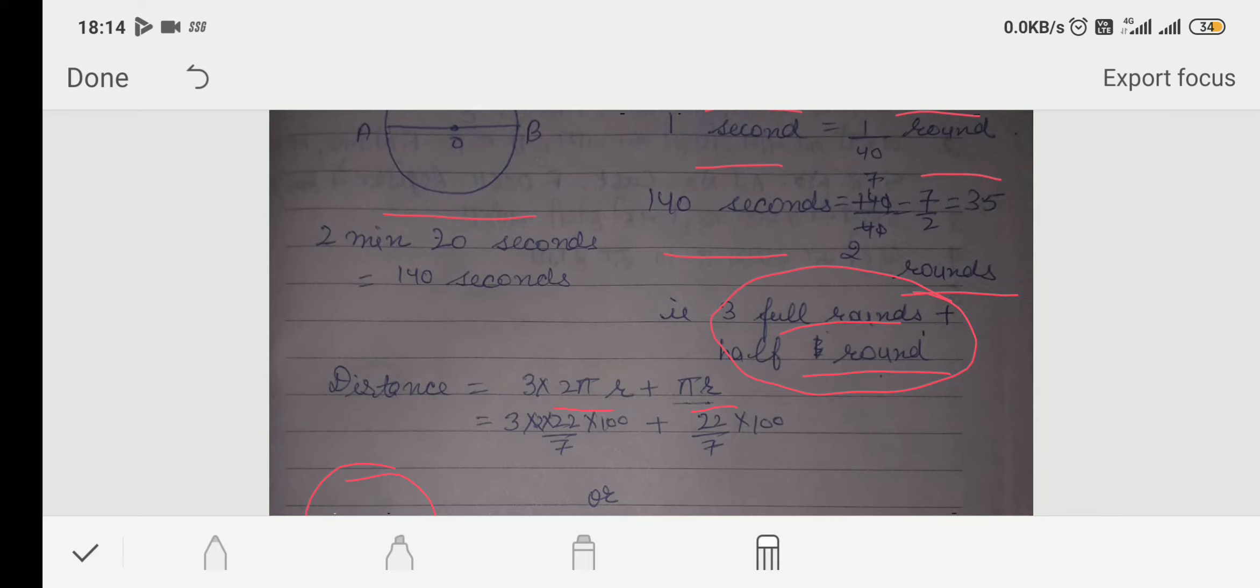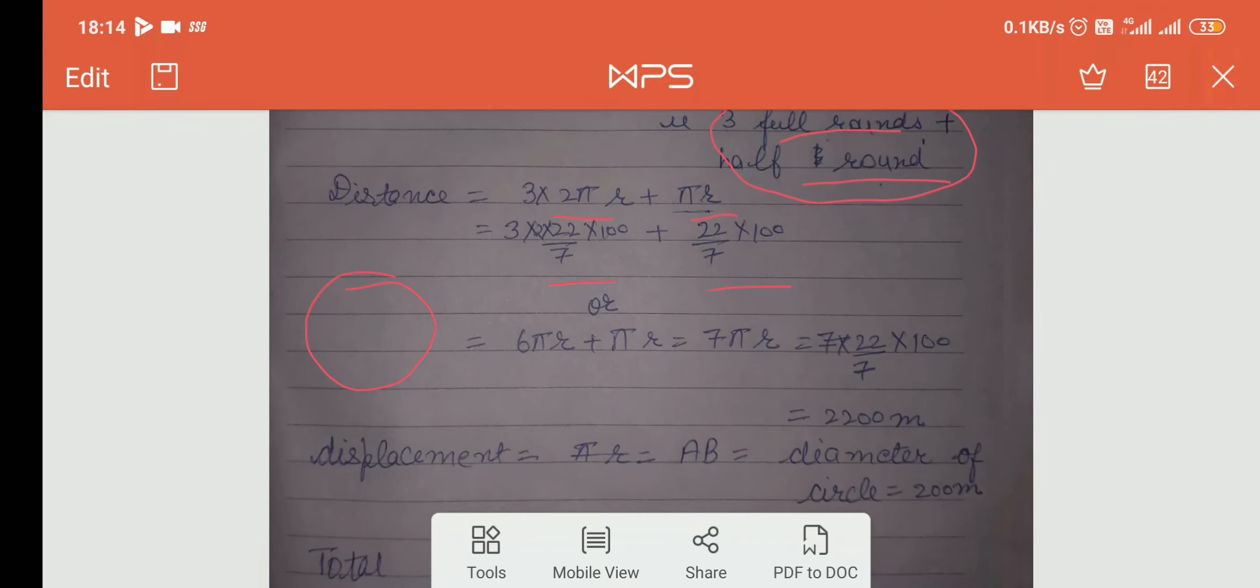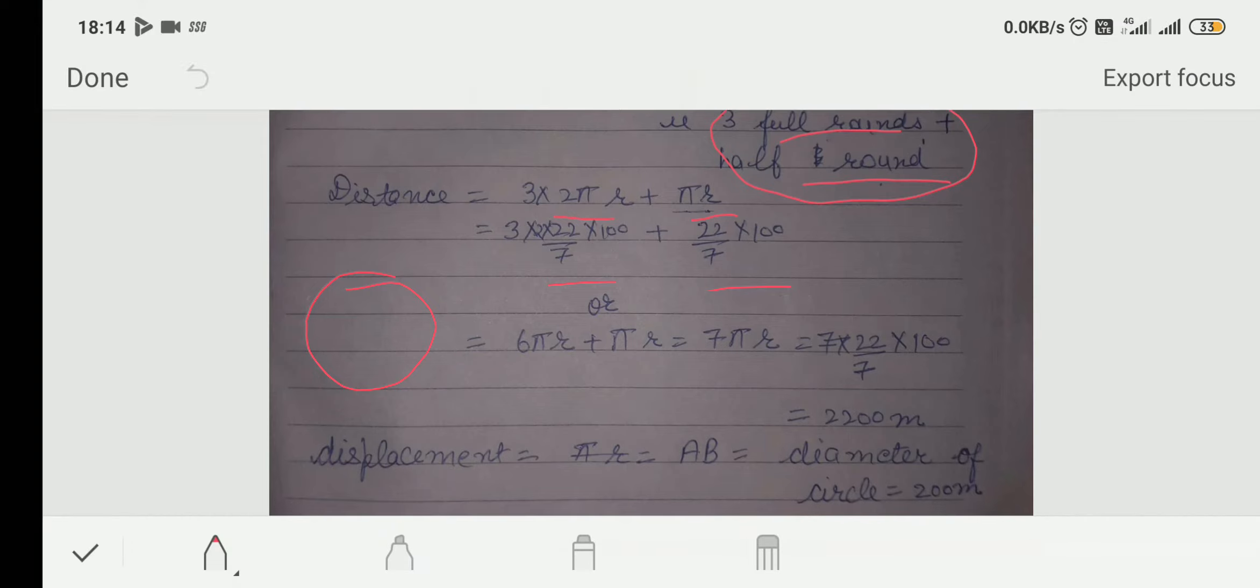So, put the value here. 3 into 2 into 22 by 7 into 100. Or, use this line instead of previous line. 6 pi r plus pi r which becomes 7 pi r. Put the values of 7 pi r. 7 into 22 by 7. And, it is given that diameter of a circular track is 200 meter. So, radius will become 100. Solve it. You will cancel 7 with 7. 22 into 100 will become 2200 meter. So, this distance will be 2200 meter.